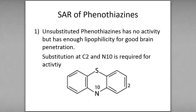The unsubstituted Phenothiazin has no activity, but has enough lipophilicity for good brain penetration. If we give unsubstituted Phenothiazin, it will not show any activity, but it will reach the brain properly. That's why as a carrier molecule, the Phenothiazin ring allows it to reach the brain.